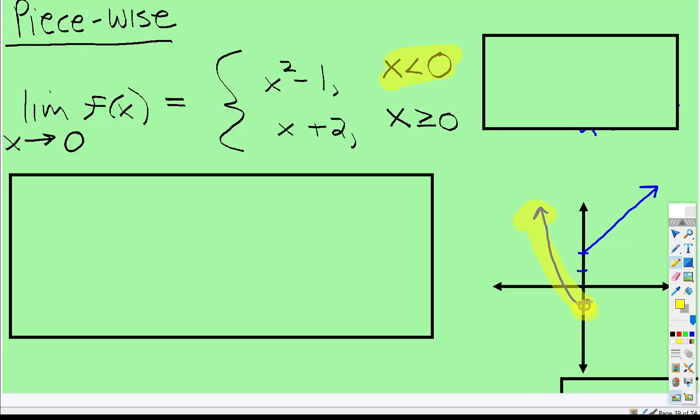And then the second piece is x plus two. Well that's just a linear. And then we only care about the x values that are greater than or equal to zero. So there's this big gap.